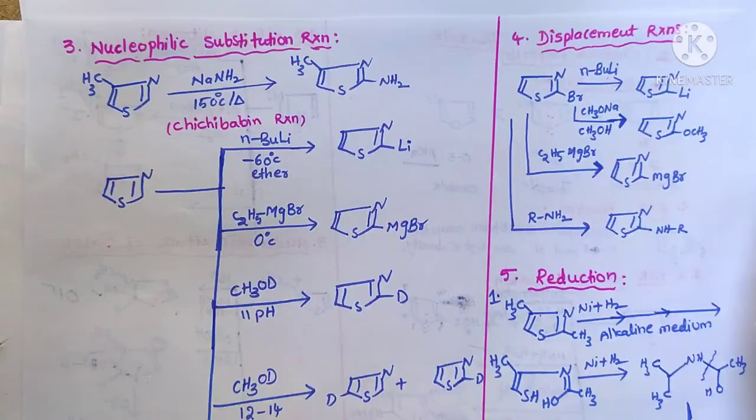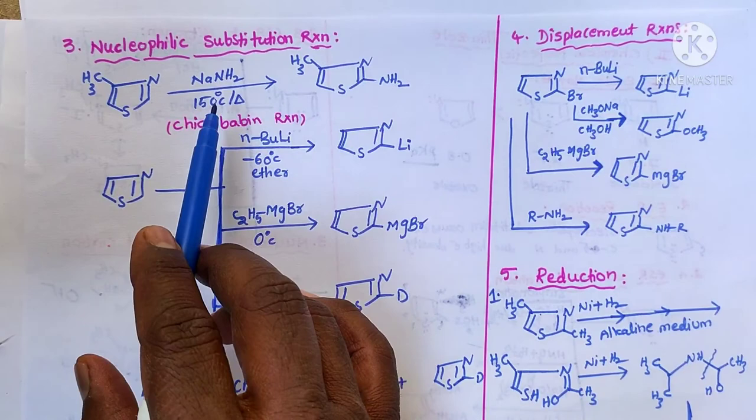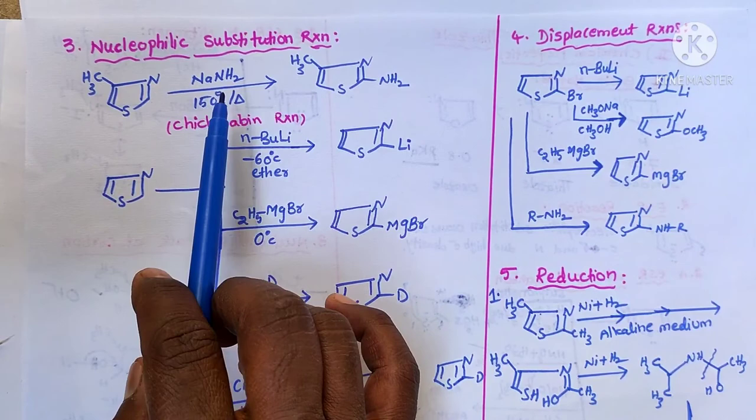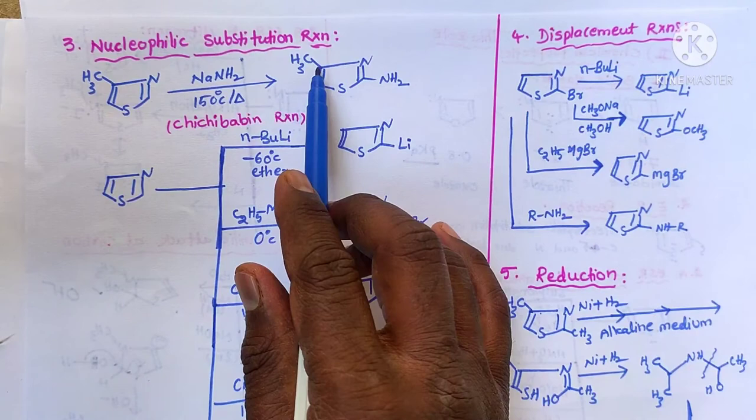This is a Chichibabin-type reaction where 3-methyl thiazole is treated with sodium iodide at 150 degrees centigrade, and we get 2-amino-4-methyl thiazole. These are further nucleophilic substitution reactions.